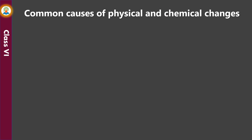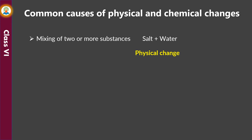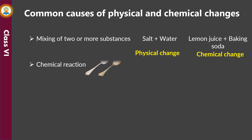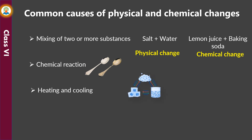Common causes of physical and chemical changes: Mixing of two or more substances can cause a physical change — for example, when salt is added to water it forms a solution, and salt can be recovered by evaporation with no new substance formed. A chemical change also occurs when two substances mix together — for example, when lemon juice is added to baking soda, bubbles of carbon dioxide rise in the mixture and new substances with entirely different properties are formed. Silver articles corrode when exposed to air. Heating and cooling can bring about a change in the physical state of matter. Application of force also causes change — for example, when a potter applies force on a lump of soil, he gives shape to the lump.